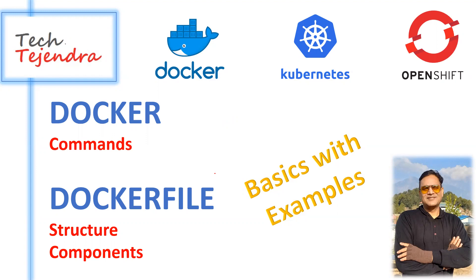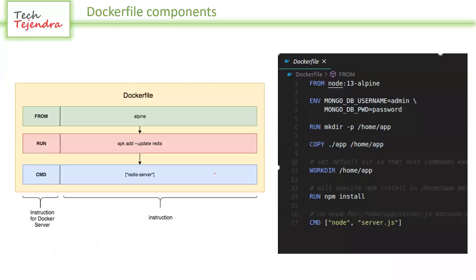So first, what is a Dockerfile and what are the components of Docker? A Dockerfile is essentially a set of instructions written in a simple text file format. These instructions are for creating our image — we are telling the Docker daemon to use these instructions and create our build or create our image.